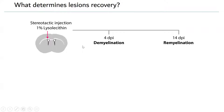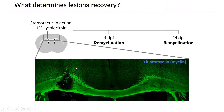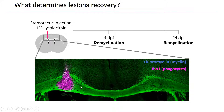Typical time points are 4 days post injection (DPI), the maximal lesion volume, and 14 DPI, a time point of active remyelination. At 4 DPI you see the lesion in myelin staining and a striking infiltration of Iba1-positive cells — 90% of these are microglia, with only few cells coming in from the periphery.